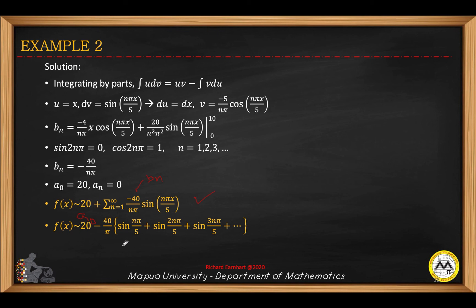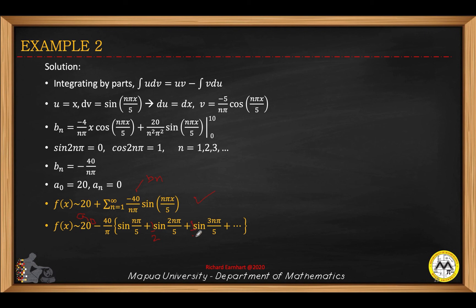We can substitute specific values of n. The series equals 20, and we can factor out negative 40 over π as a constant. When n equals 1, we have sine(πx/5). When n equals 2, we have one-half sine(2πx/5). When n equals 3, we have one-third sine(3πx/5), and so on.